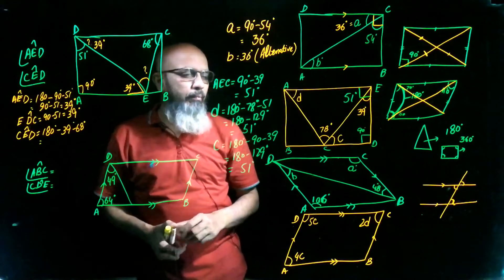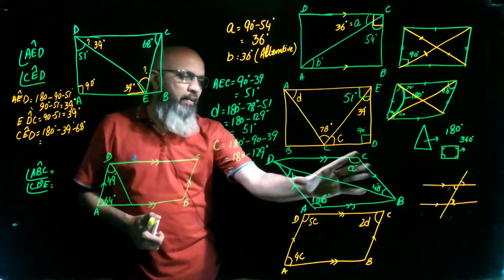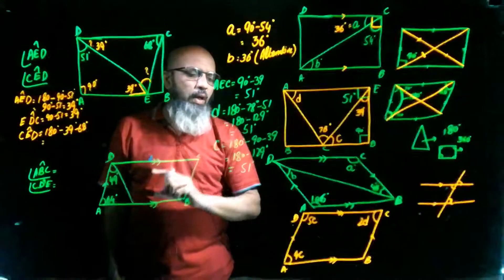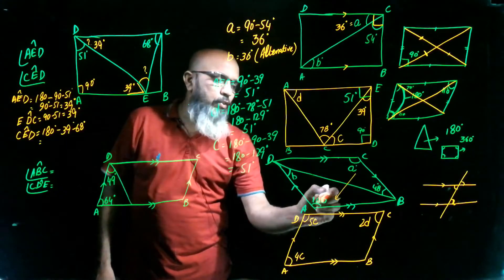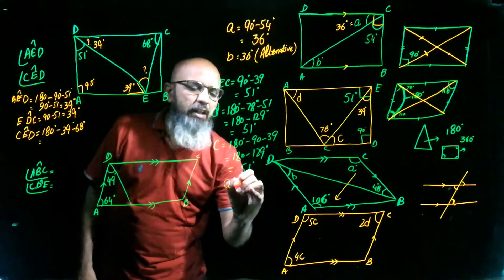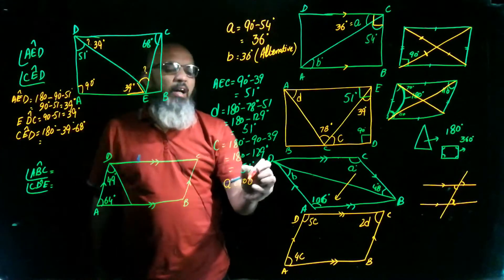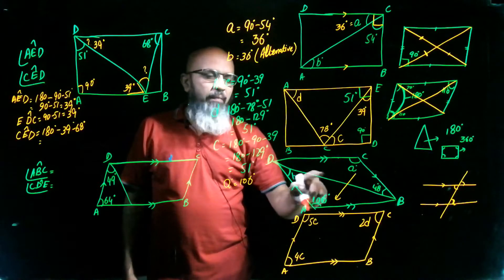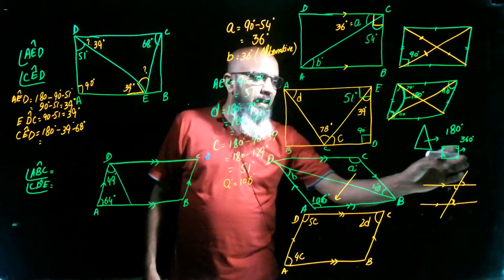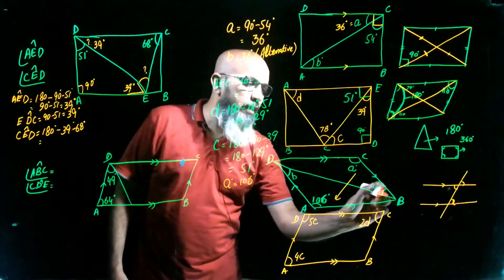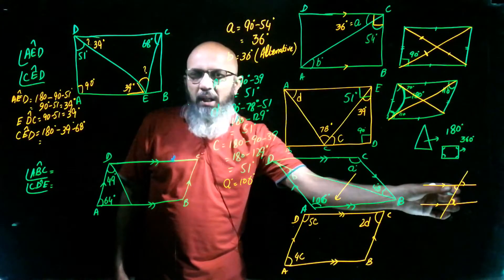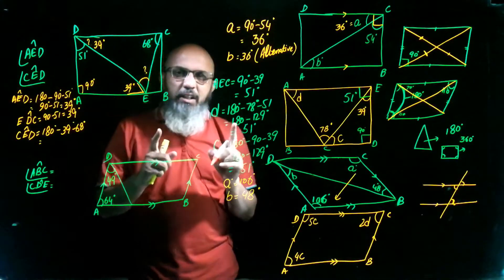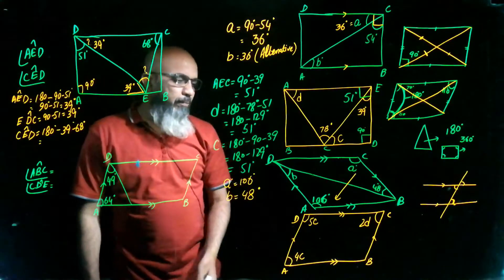Now we move to questions about parallelograms. In a parallelogram, both pairs of opposite sides are parallel, but the angles are not right angles. Opposite angles are equal. So if one angle is 106 degrees, angle A is also 106 degrees — the reason being opposite angles of a parallelogram. For angle B, using the alternate angles property with the two parallel sides and transversal, angle B equals 48 degrees.